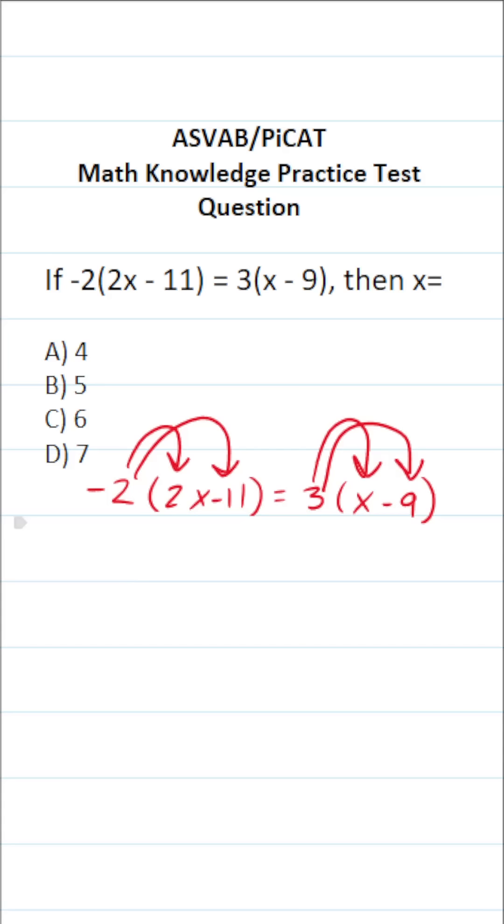Negative 2 times 2x, a negative times a positive is going to be negative 4x. A negative times a negative, that is negative 2 times negative 11, is going to be positive 22 equals 3 times x, which is 3x. 3 times negative 9, a positive times a negative is going to be negative 27.